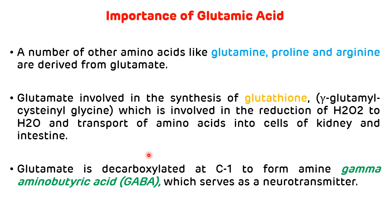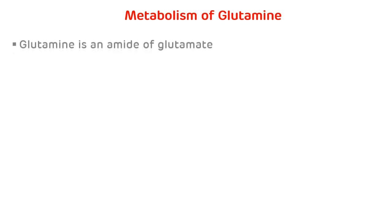The third importance of glutamic acid is that decarboxylation of glutamate leads to the formation of one amine called gamma-aminobutyric acid, which acts as a neurotransmitter. These are the importances of glutamic acid.